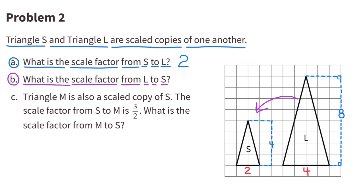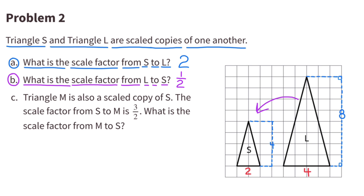B. What is the scale factor from L to S? Going from L to S, the base was 4 and became 2, and 2 is half of 4. The height was 8 and became 4, and 4 is half of 8. The scale factor from L to S is 1 half.